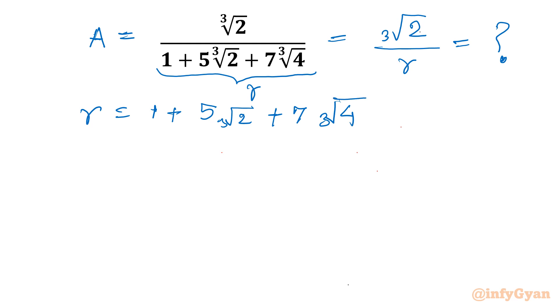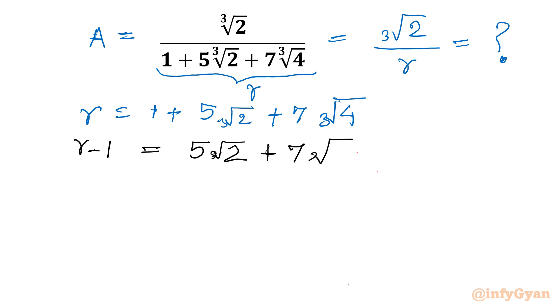Now take away 1 from both sides. So on the left hand side it would be R minus 1, and on the right hand side we can write 5 times cube root of 2 plus 7 times cube root of 4.